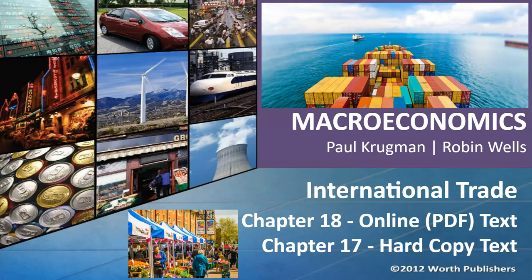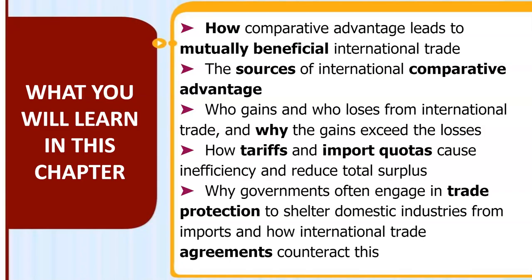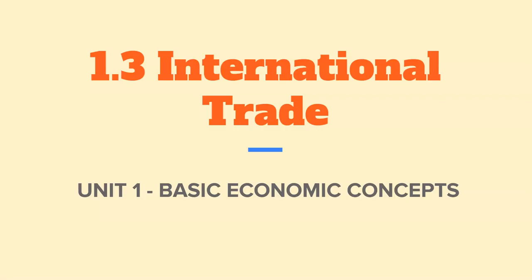One of those aspects we're going to start with is the idea of international trade. We talked about gains from trade before, and we're going to address it here. We'll look at gains from trade, comparative advantage, mutually beneficial trade, sources of comparative advantage, and things countries do to encourage or discourage trade — including tariffs, quotas, and trade protections that lead to trade agreements.